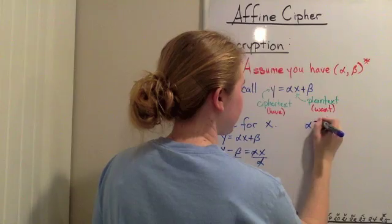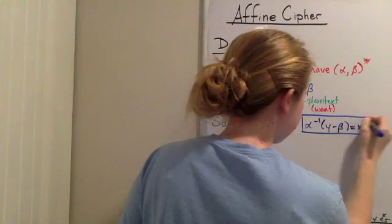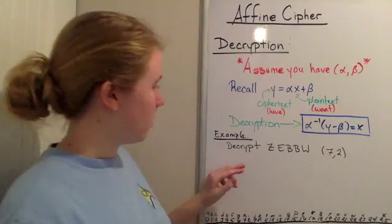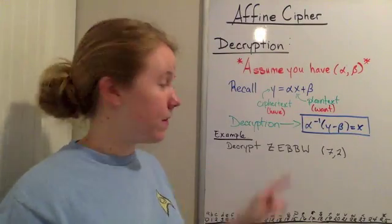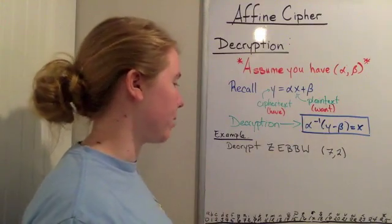and say that the inverse of alpha times y minus beta equals x. I'm going to copy that up here. This right here, that is your formula for decrypting. Okay, so this is our decryption formula. Now I'm going to use this formula to do an example.